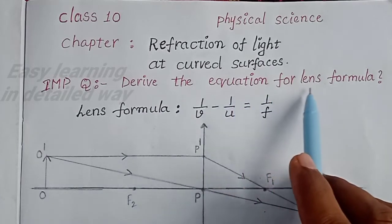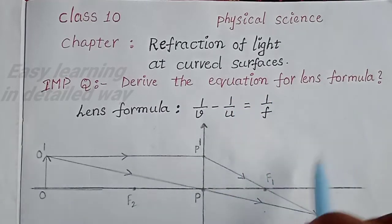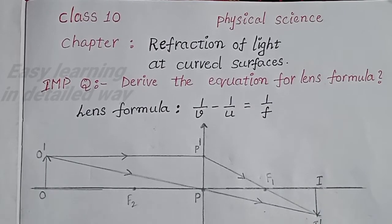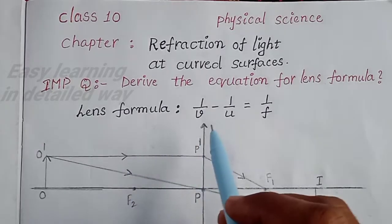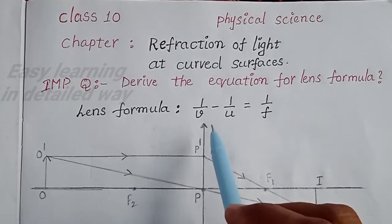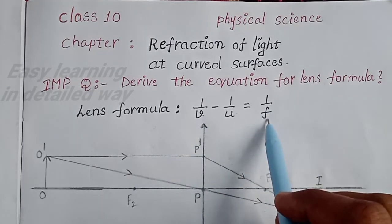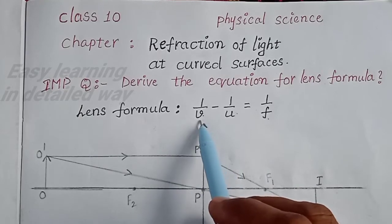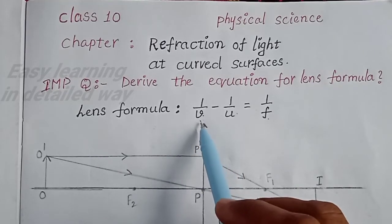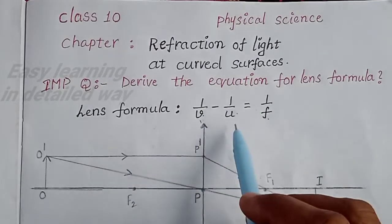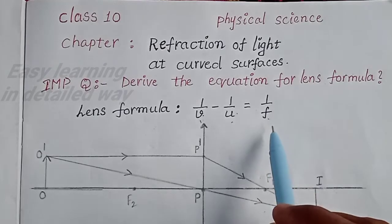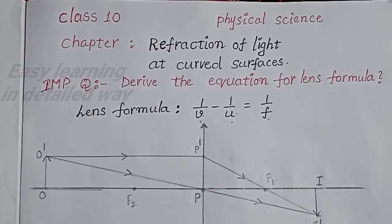See the question here: derive the equation for Lens Formula. The Lens Formula is the equation you need to derive in the exam. So, 1 by V minus 1 by U is equal to 1 by F. Now, V stands for the distance of image, U stands for distance of object, and F stands for focal length of the lens.